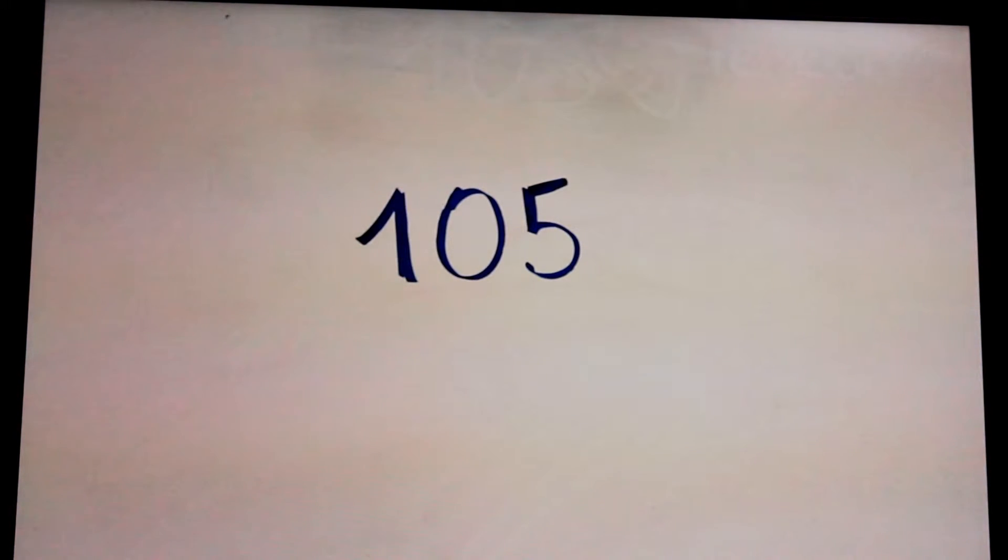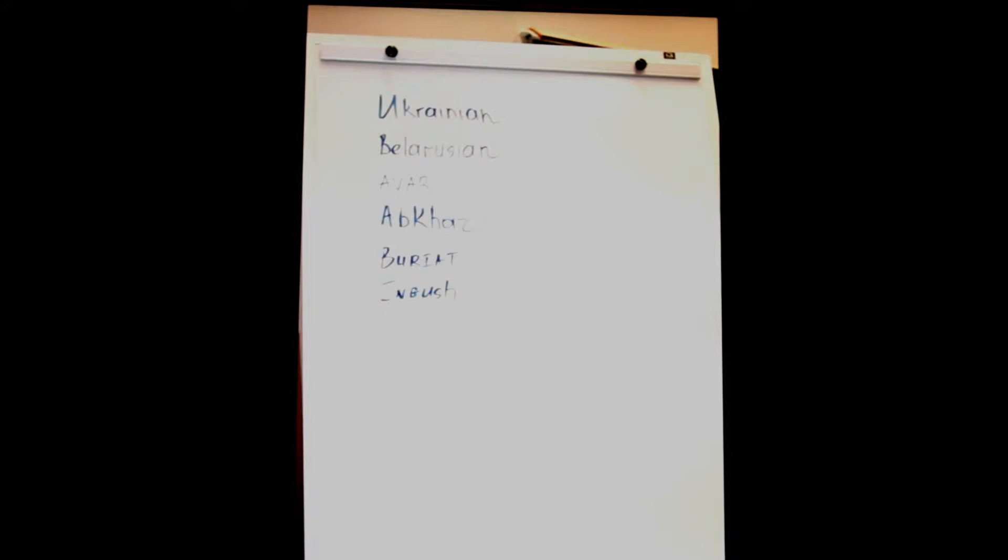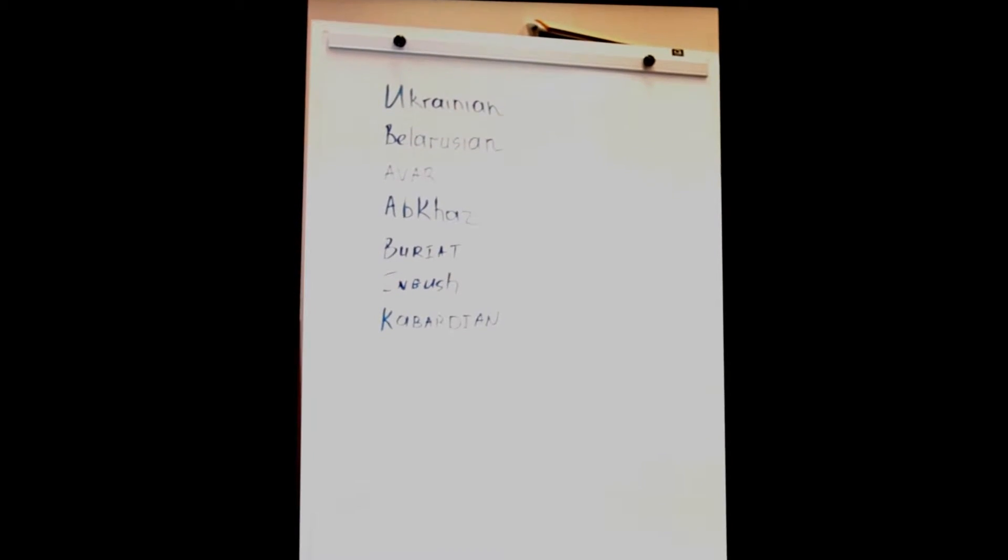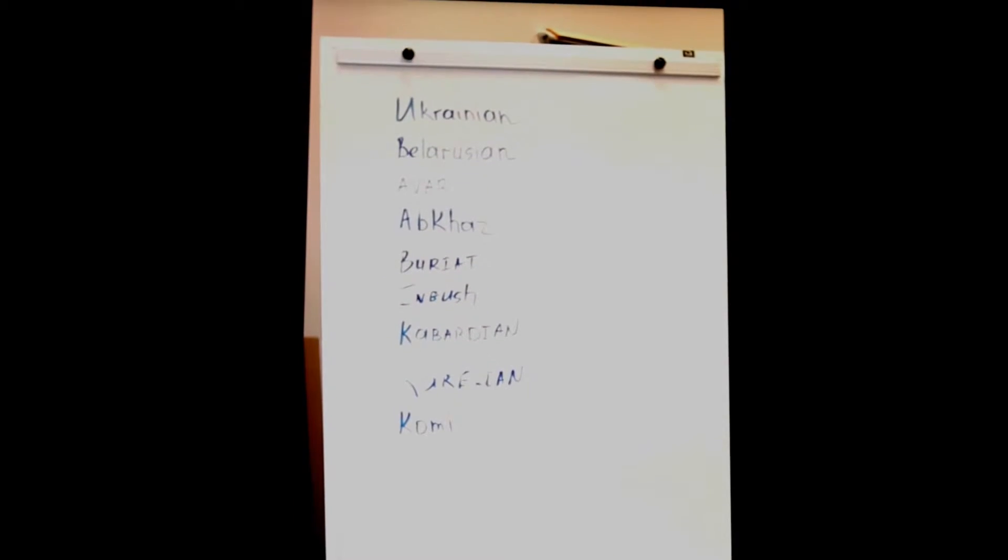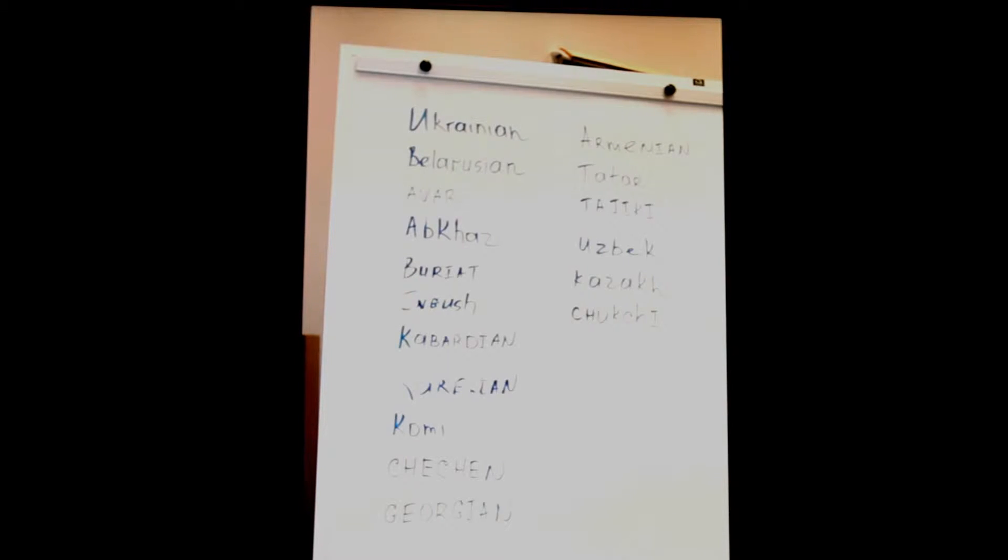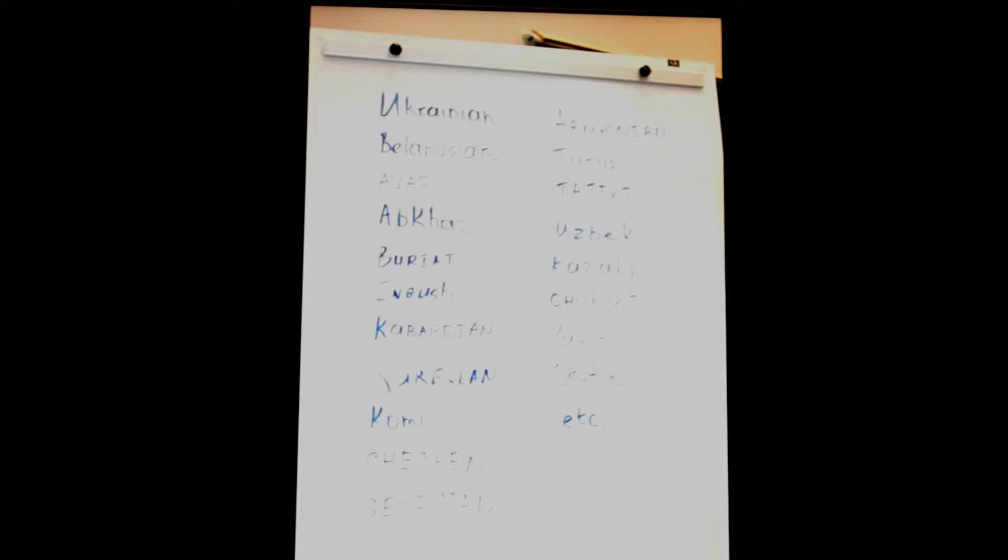Apart from Russian, people also speak Ukrainian, Belarusian, Avar, Abkhaz, Buryat, English, Kabardian, Karelian, Komi, Chechen, Georgian, Armenian, Tatar, Tajik, Uzbek, Kazakh, Chukchi, Yakut, Ossetian, etc.